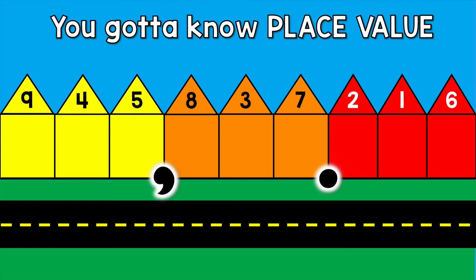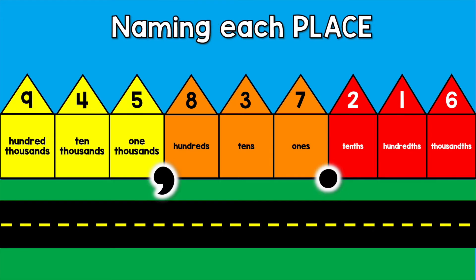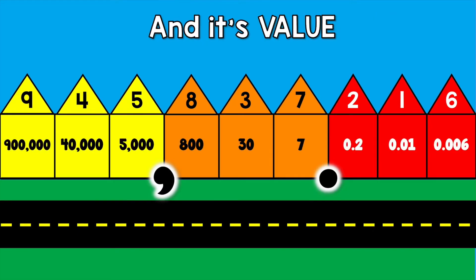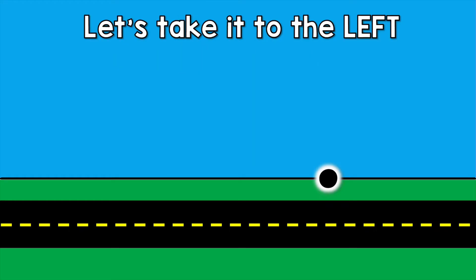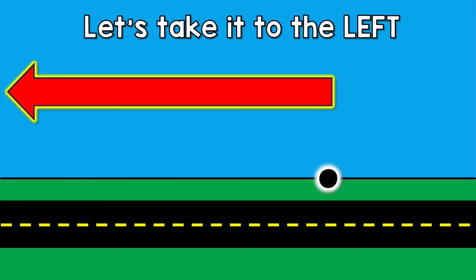You gotta know place value, name it in each place and its value. I see you dancing on the decimal, let's take it to the left.